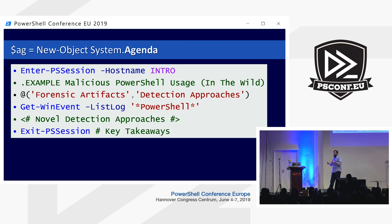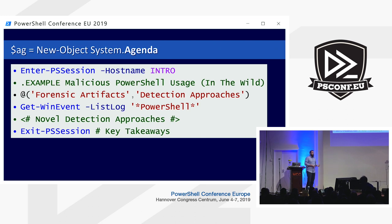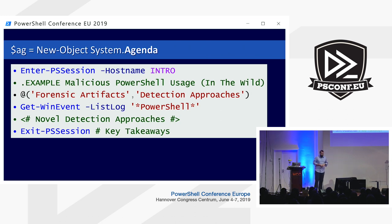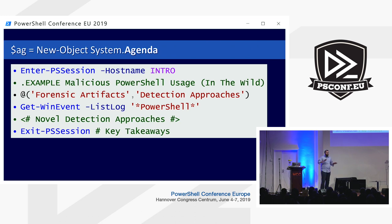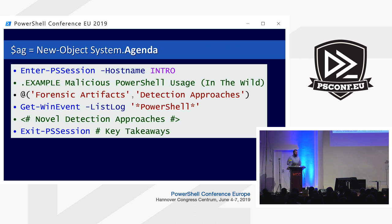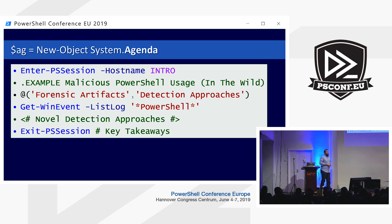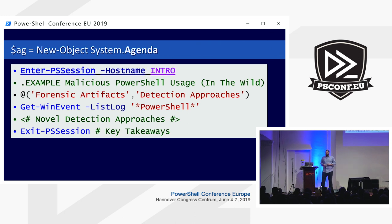Along the way, we'll look at forensic artifacts and detection approaches that we use to help both ourselves and our customers be more informed about detecting malicious usage. Then we'll dive into the awesomeness of PowerShell logging — primarily module logging, script block logging, and transcription logging — and look at those in the context of different attack approaches to really see the value proposition of enabling this logging. At the end, we'll talk about novel detection approaches and key takeaways.